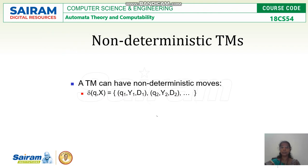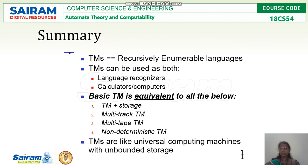Next is the non-deterministic Turing machine. Non-determinism means a state taking a single input and moving to more than one state. So in a Turing machine, if a state reads an input and makes a move to more than one state — for example, moving to q1 and q2 and so on — such Turing machines are known as non-deterministic Turing machines.